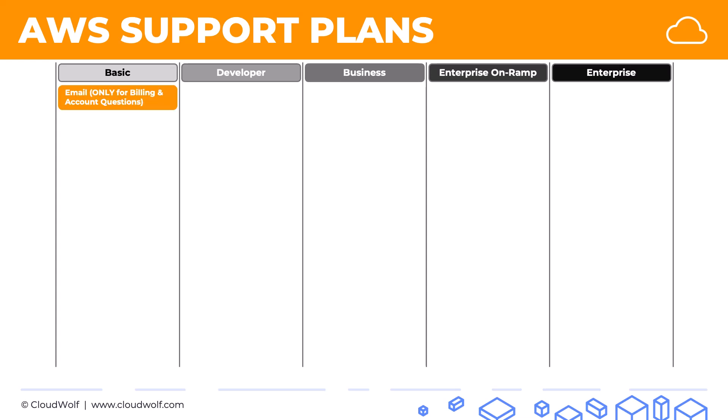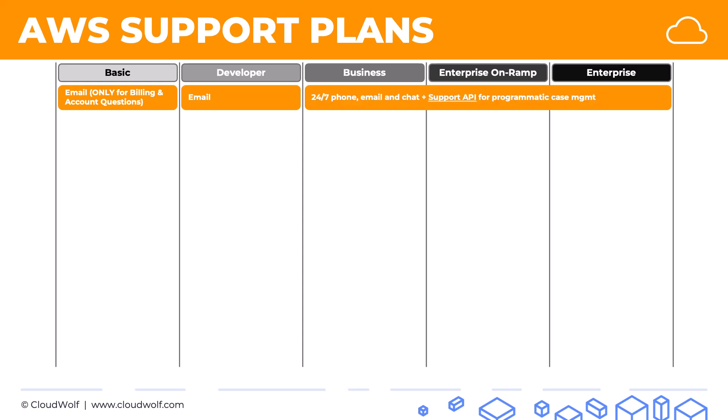With the basic plan you only get email support, and that is only for billing and account questions — no architectural guidance. With the developer plan you get email support, and with the other three you get much more: 24/7 phone, email, and chat support. Plus, importantly for the exam, you get access to a support API for programmatic case management. A typical exam question might ask for the most cost-effective plan that still provides programmatic case management — the answer would be the business support plan.